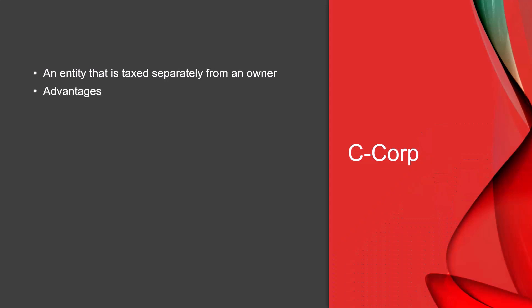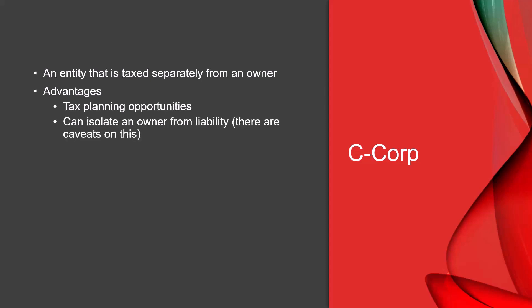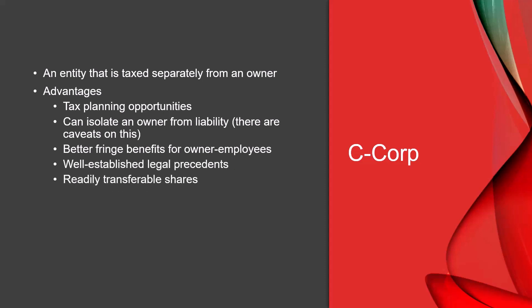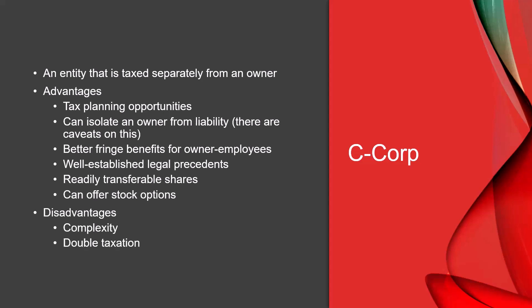The next kind of corporate entity is a C-Corp, which is taxed separately from the owner. The advantages include better tax planning opportunities, isolation of the owner from liability, better fringe benefits for owner-employees, well-established legal precedents, readily transferable shares, and the ability to offer stock options. The disadvantages are that it's more complex to set up, there can be double taxation, and it requires a lot of paperwork and formality.